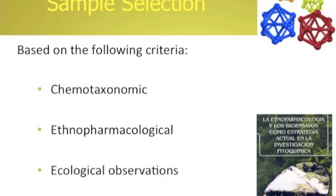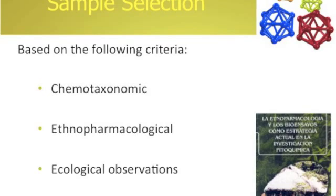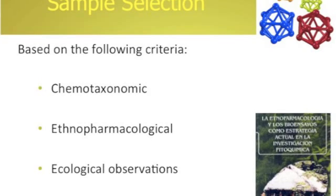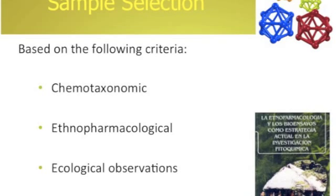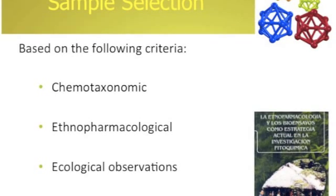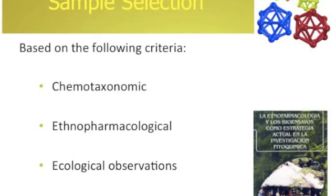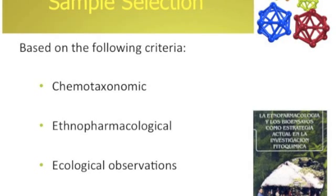To use these tools, we need to address sample selection. How do we select the samples? The answer is based on three criteria: first, chemo-taxonomic; second, ethno-pharmacological; and finally, ecological observations related to the traditional use of plants.